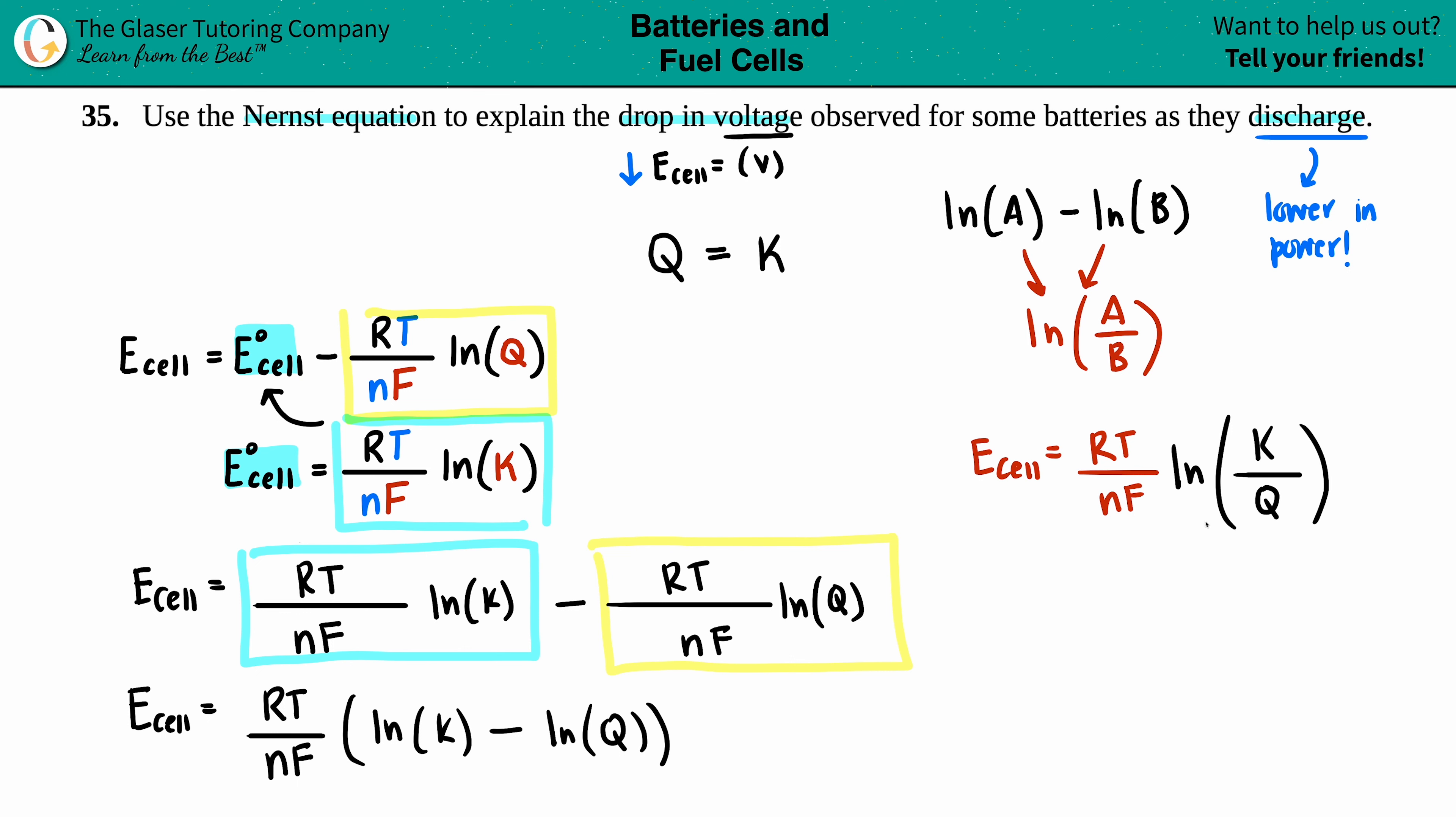Alright, now we have one nice equation. We said that Q equals the K value. What's going to happen is if these K and Q values are the same - let's pretend they're one - if I plug that in, E_cell equals RT over nF times ln(1/1). Well, one divided by one is one, and ln(1) is zero. Zero times all of this gets me an E_cell of zero.